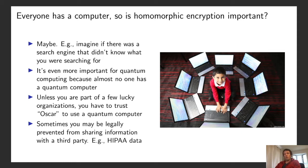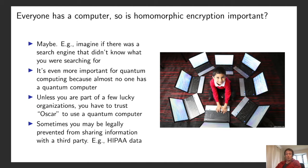Homomorphic encryption is even more important for quantum computing, because almost nobody has a quantum computer — only a few organizations in the world have their own quantum hardware. Unless you belong to one of these organizations, you're going to have to trust a third party to do computation for you. In some cases, you may be legally prevented from sharing information, for example if you have HIPAA data — sensitive health-related data — there are many laws about how that data can be shared. If you needed to use a quantum computer to process that data but weren't allowed to share it with a third party, you simply might not be able to do the computations you need.